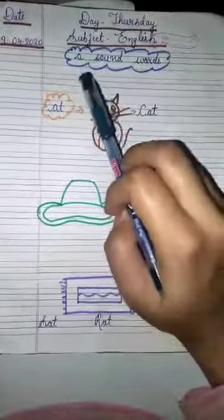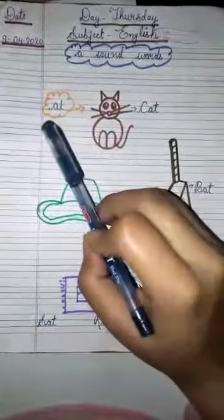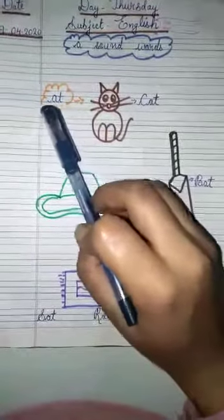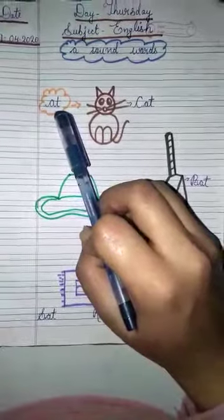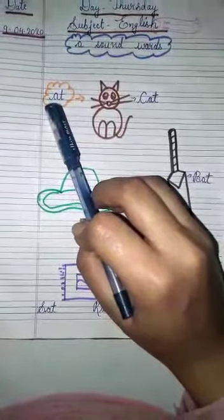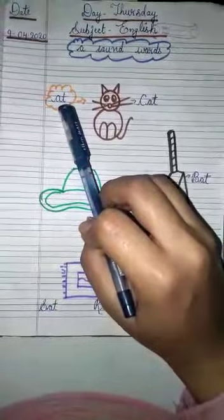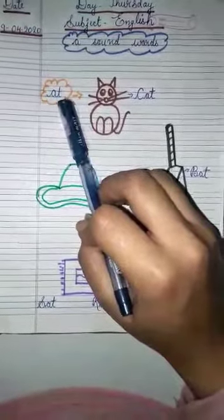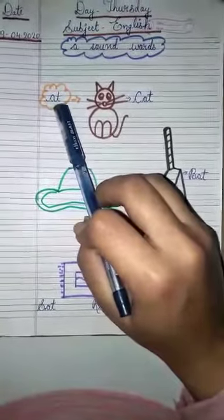So, from A sound words, first of all, we will learn some words which have the sound of A-T. What is the sound of A? A. And what is the sound of T? T. When we say both of these sounds together, A-T.